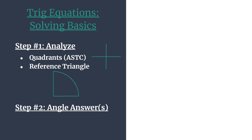Here's our outline. In step 1, we'll analyze: we'll find which quadrants our angles will be in, and we'll find the reference angle and triangle that we'll be working with. These two things together in our analysis step will help us synthesize in step 2 our angle answers.